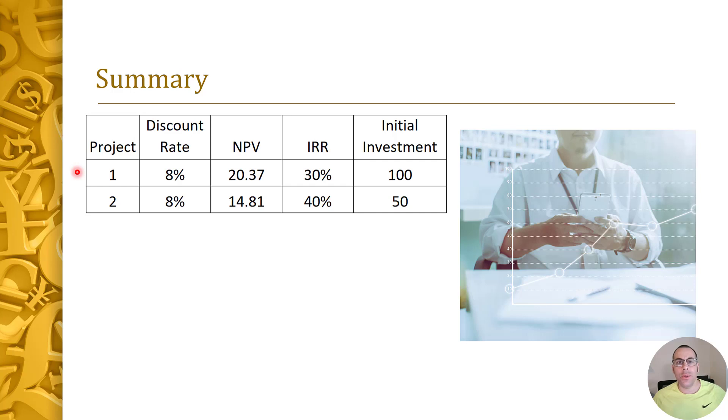Project one has a higher NPV but a lower IRR. Which project should we take on if we could only take on one project, project one or project two? Whichever one you picked, you're probably right because you could justify either project. If we could only invest $100, then project one would make the most sense, right? Because it would add $20 of value to the company. But if we have the opportunity to invest in project two twice, meaning we can invest $50 in project two, then another $50 in project two, that would give us almost $30 in NPV and that would definitely be a lot better than project one.